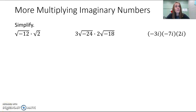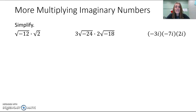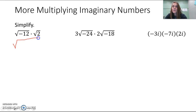Simplify the following — we have a few different types to look at. First, simplify the square root of negative 12 times the square root of 2. With simplifying square roots, there are different ways to start. We could multiply the two square roots together first, or simplify √12 first. Since simplifying first might require simplifying again afterward, let's do the multiplication first. We can put the numbers together under one square root, giving us the square root of negative 24.